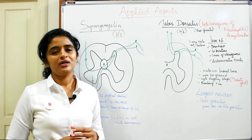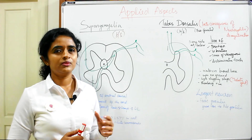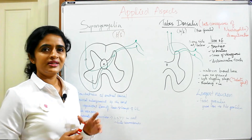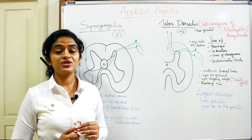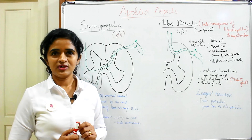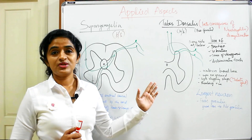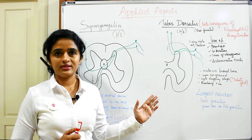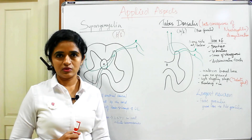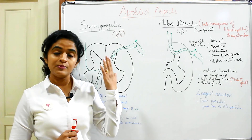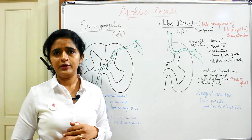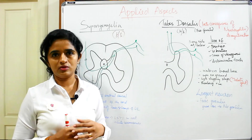In the coming sessions, I will be talking about Brown-Séquard syndrome and some applied aspects as well as the blood supply. In the last session, I asked which is the longest neuron in the body. The answer is the neuron travelling through the fasciculus gracilis, because it starts from the receptor of the toe and ascends all the way up to the nucleus gracilis of the medulla.